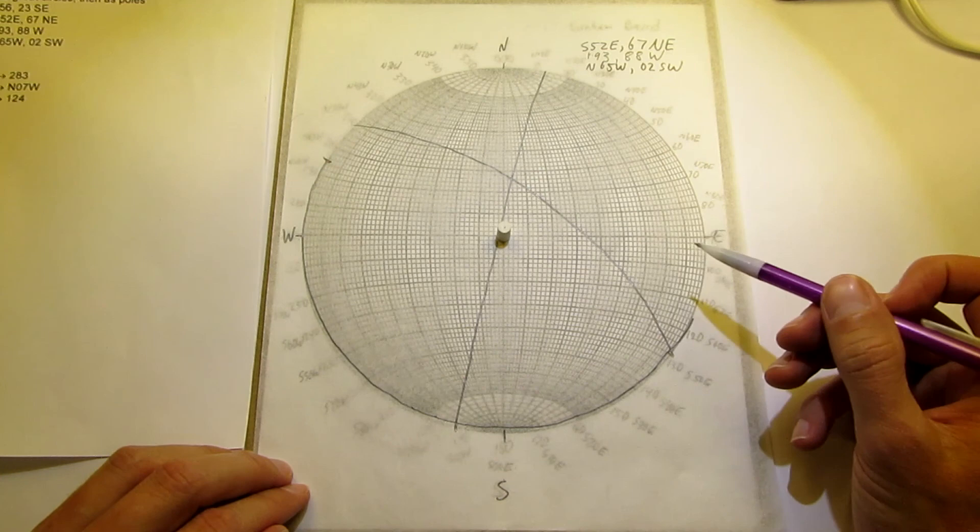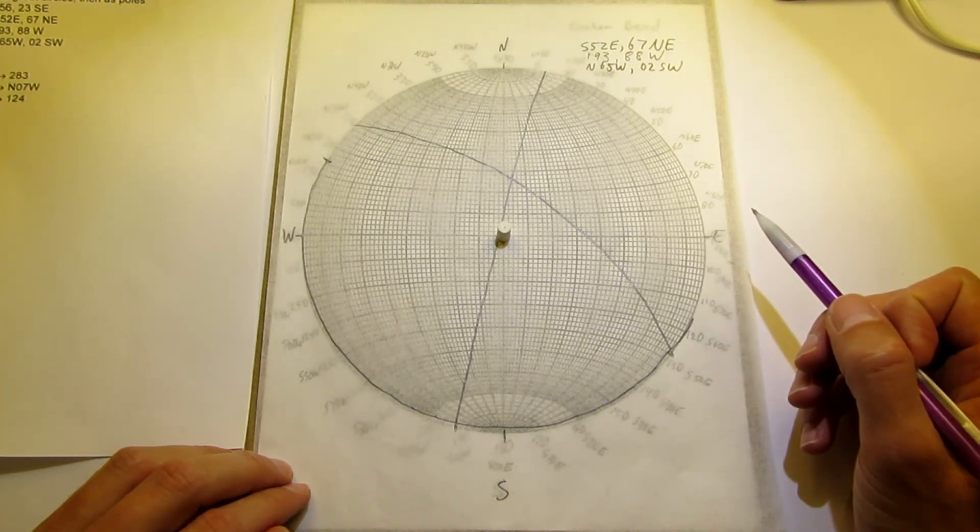Okay, so that's plotting planes as great circles. In the next video, we'll do planes as poles.